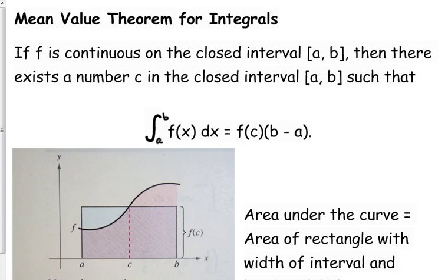So where this comes from is something called the mean value theorem for integrals. We've already got a mean value theorem for derivatives. Remember, that says the slope of the secant line is equal to the slope of the tangent line somewhere on that interval.